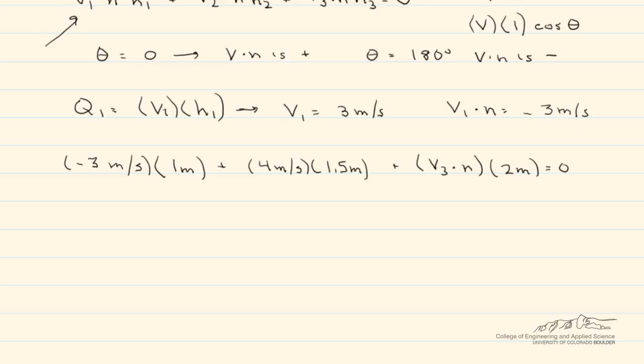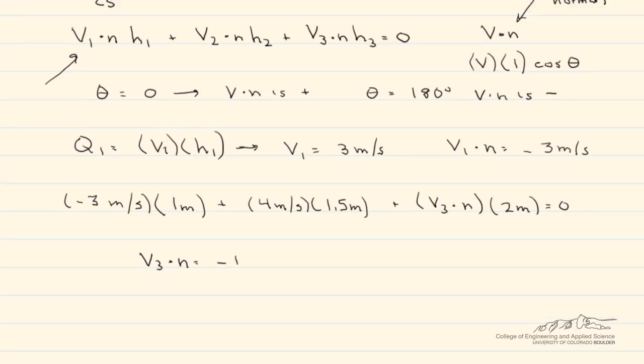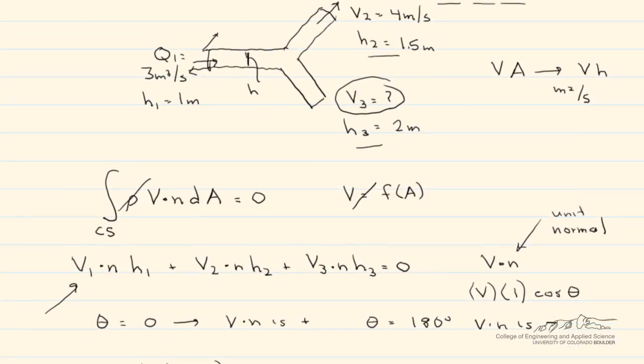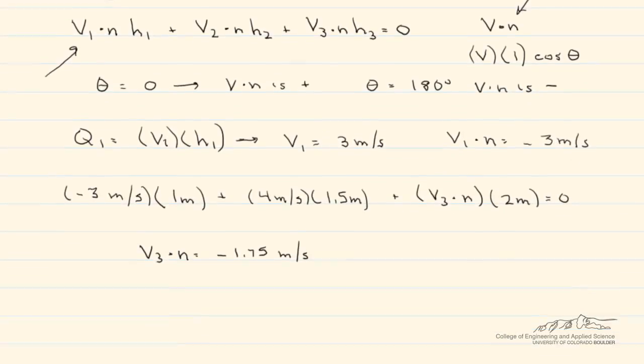When we solve for V3·n, what we find is that it equals -1.5 meters per second. So what does that mean physically? That means V3 is actually going into the system since V·n is negative.